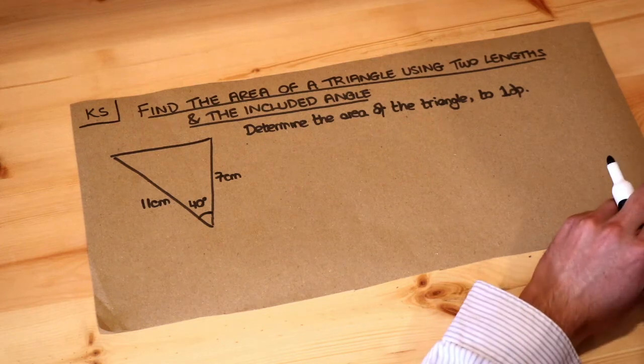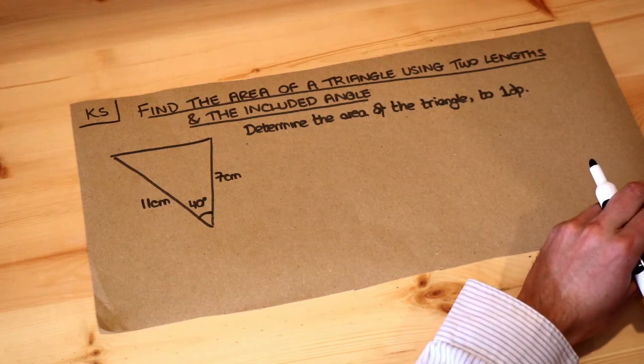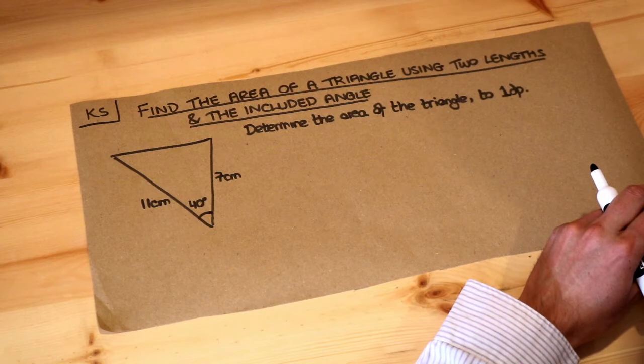Hello and welcome to this Dr Ross Maths key skill video on finding the area of a triangle using two lengths and the included angle.